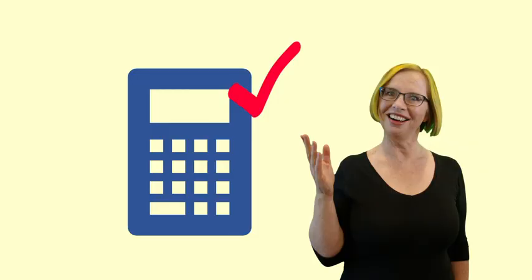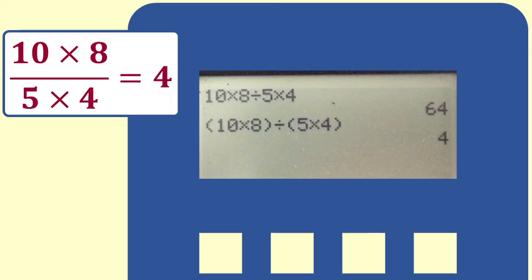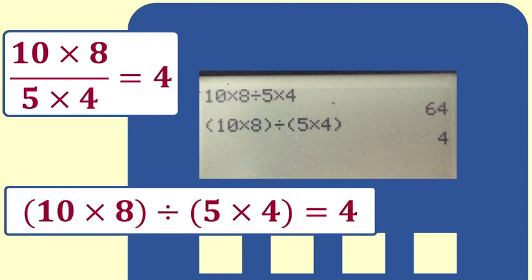Modern calculators will use order of operations when calculating so entering the expression as it is written will give you the correct answer. However you need to be careful how you input your expression and put in implied brackets. For example, 10 times 8 divided by 5 times 4 is 80 divided by 20 which equals 4. For one line calculators and spreadsheets you will need to put in the brackets as brackets 10 times 8 divided by brackets 5 times 4.